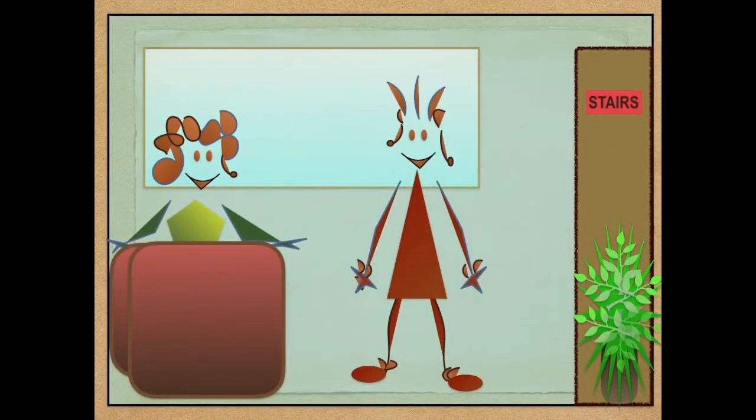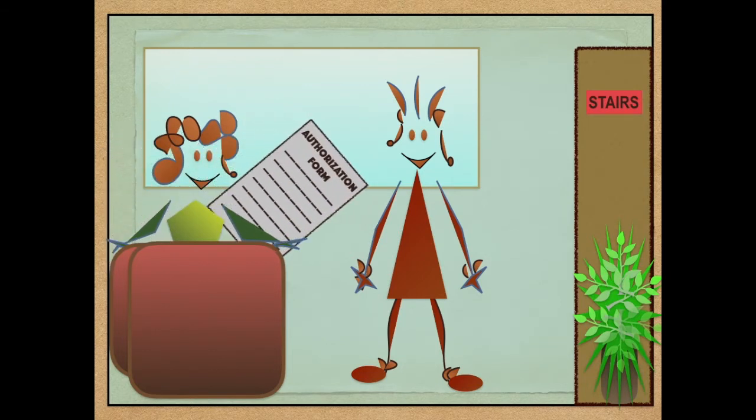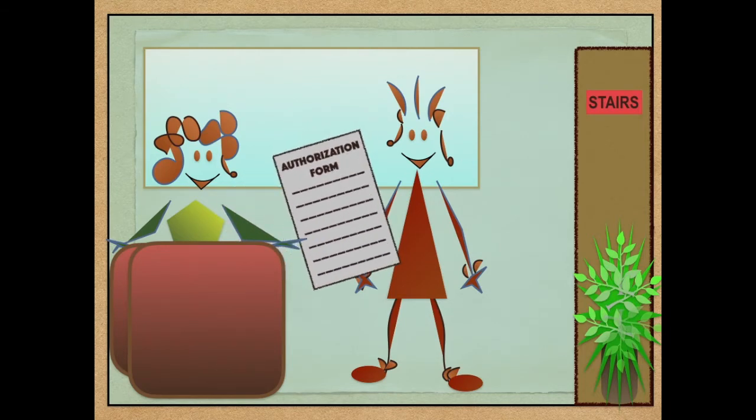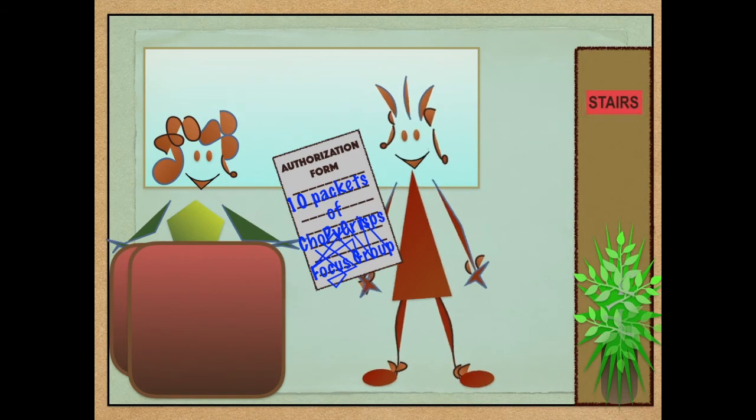She goes to speak to Alice, Eric's secretary. 'Hi Alice. I need a favour. Could you please get me 10 packets of choppy crisps? I need them now for a focus group,' says Jane. 'Do you have an authorization form?' asks Alice. 'A what?' says Jane. 'You need an authorization form.' Alice gives Jane a document which says authorization form on top and then tells her to write how many packets she wants and why she needs them. Jane fills in the form and signs it. 'Okay, here you are.' 'Now, go downstairs, open that door which says storage room and take the 10 packets of cookies you need.' 'Great. Thank you so much.'